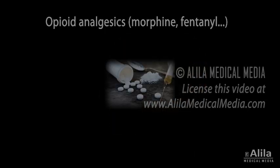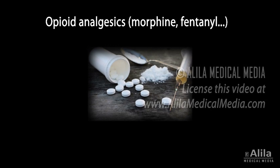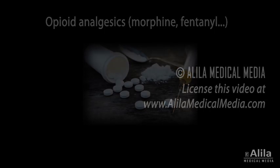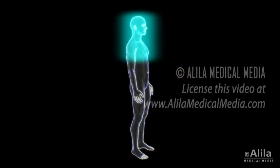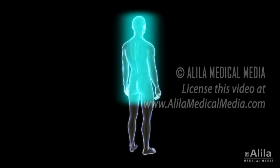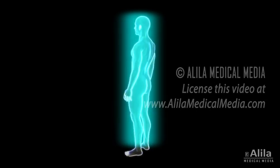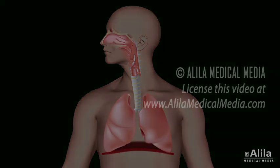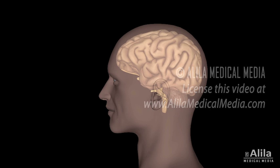Opioid analgesics, such as morphine and fentanyl, mimic the action of endogenous opioids. They are powerful painkillers and are commonly used to manage severe pain. Continuous use, however, may lead to tolerance and dependence. Opioids slow down breathing and overdose can be fatal. Their psychoactive effects also make them common drugs of abuse, with morphine being particularly susceptible to addiction.